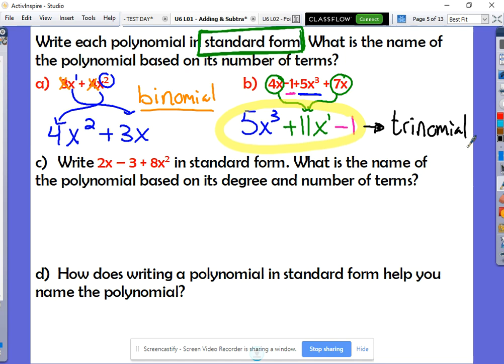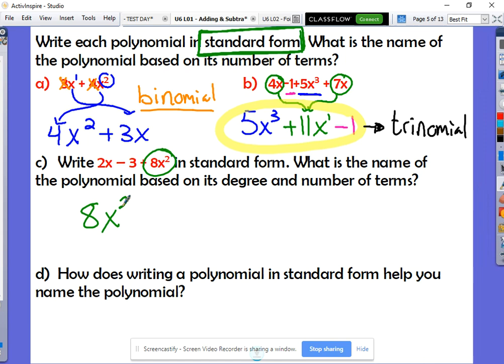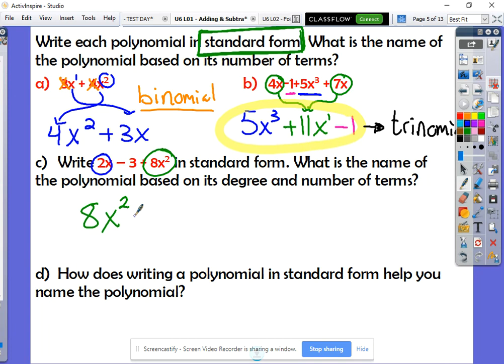So let's keep practicing. Try letter C on your own. See what you get. Press pause. Try it out. First term should have been eight X to the second. That's got the largest exponent. Next term should have been the two X positive two X. And then our constant one without a variable is that negative three.